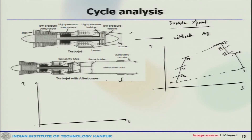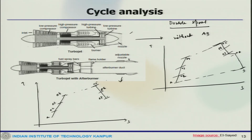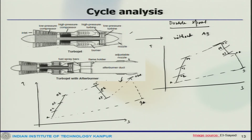For the T-S diagram with afterburner: from state 1A, then 02, 03, 04, 05, 06, 07, then 08A and finally 9A. With afterburner, the state points again start at A ahead of the compressor, then progress through 2, 3, 4, 5, 6, 7, 8, and 9. Now first we look at the situation without afterburner — the afterburner is not operative.